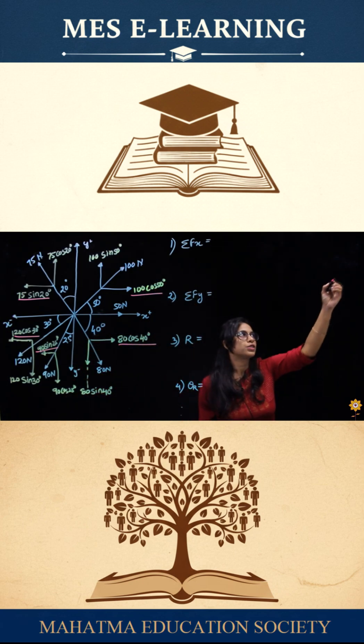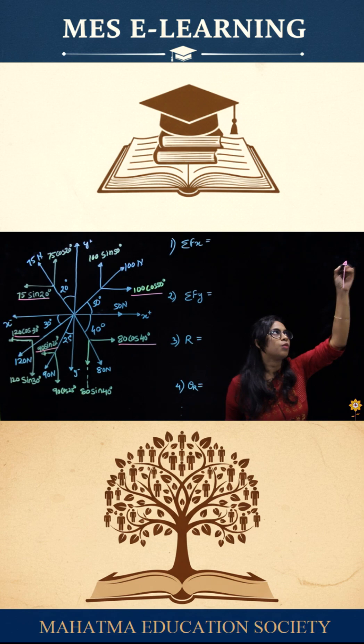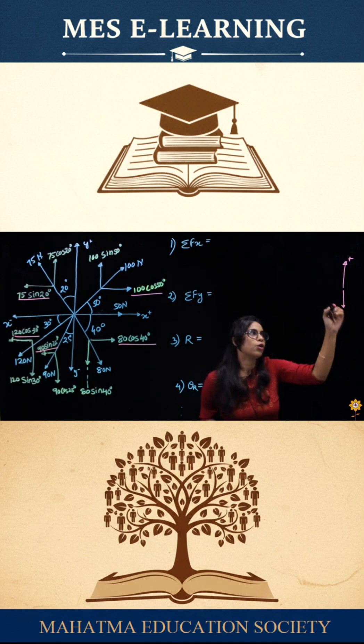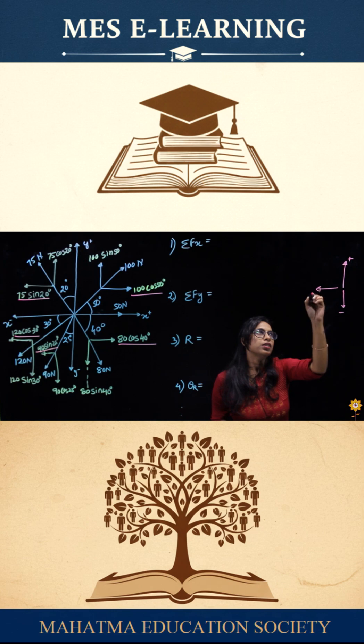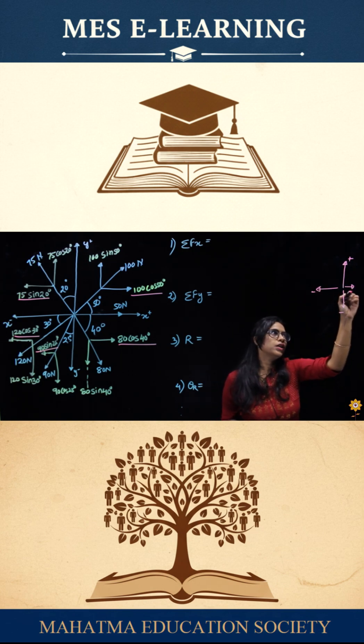As we know, for sign convention, all the forces going upward are positive. All the forces going downward are negative. Backward is negative and forward is positive.